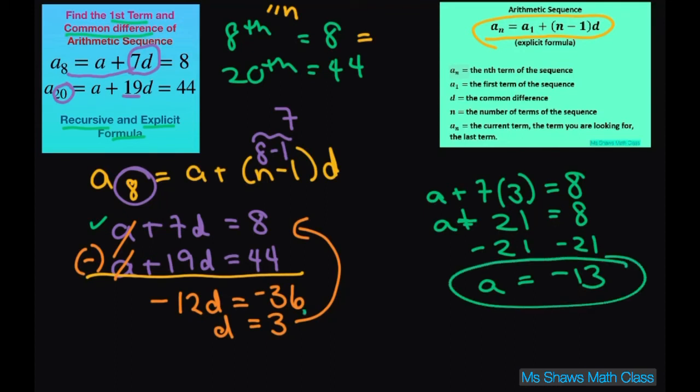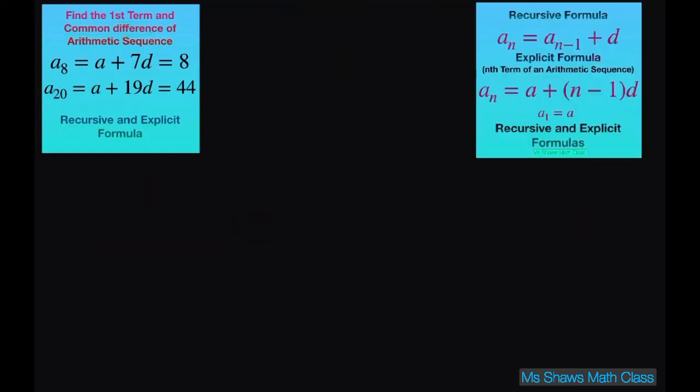So this is what they're looking for. And now let's just write our formulas. The recursive formula is pretty easy. A was negative 13 and d was 3.